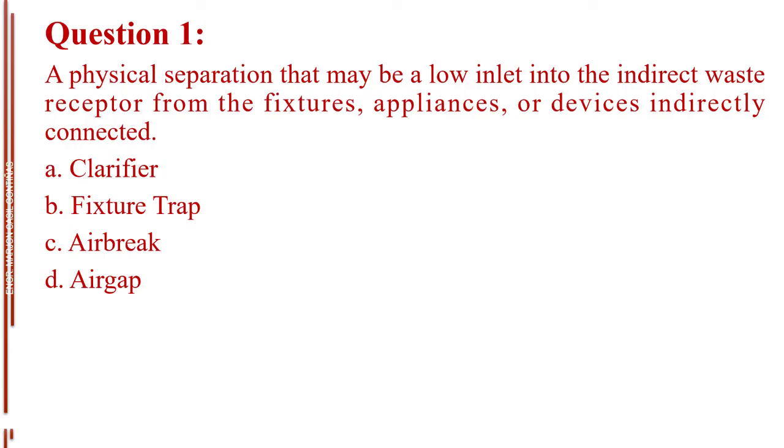Question number 1. A physical separation that may be a low inlet into the indirect waste receptor from the fixtures, appliances, or devices indirectly connected. Letter A, Clarifier. Letter B, Fixture Trap. Letter C, Air Brake. Letter D, Air Gap. The answer is Letter C, Air Brake.